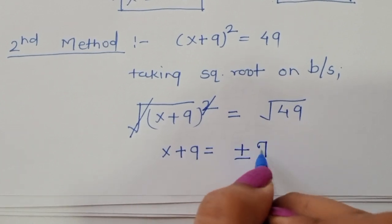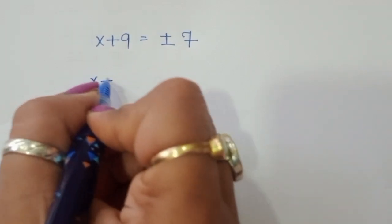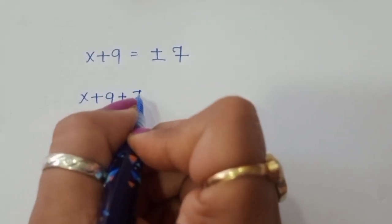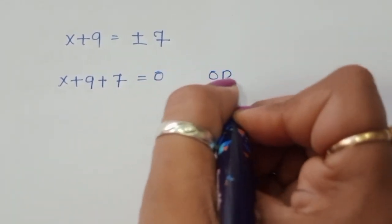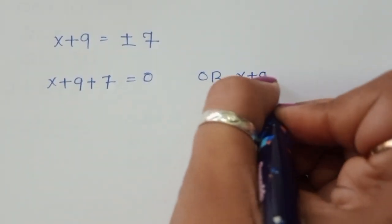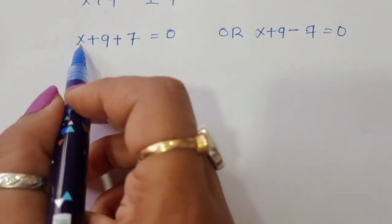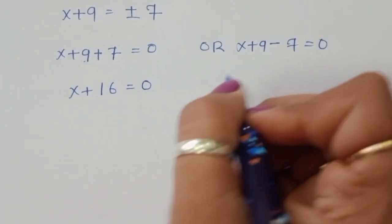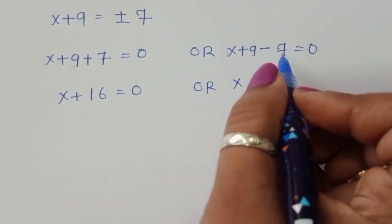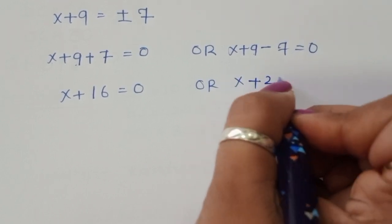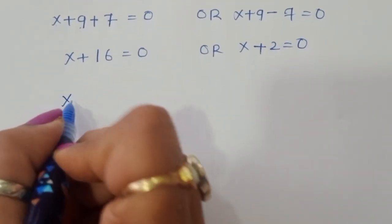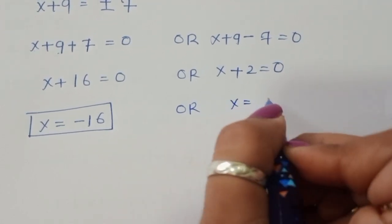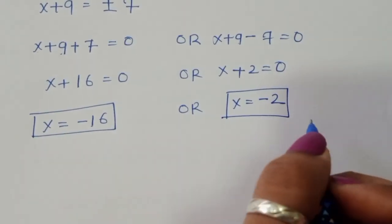The square root of 49 is plus or minus 7. So we write: x + 9 + 7 = 0 or x + 9 - 7 = 0. From the first: x + 16 = 0, so x = -16. From the second: x + 2 = 0, so x = -2.